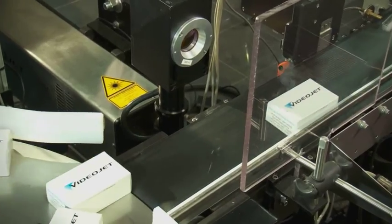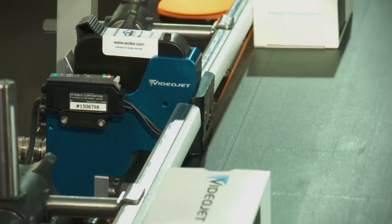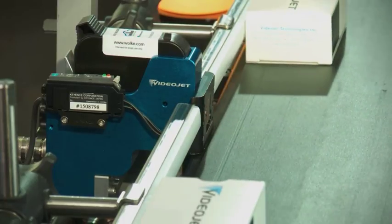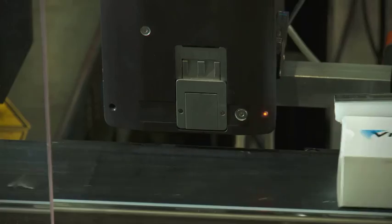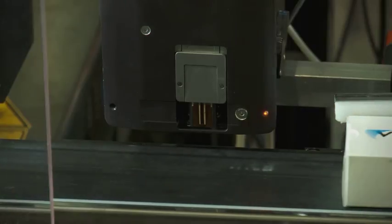Whether you use a VideoJet laser or thermal inkjet printer, you can expect high-resolution text, 2D barcodes, and other symbologies that meet regulations for human and machine readability.